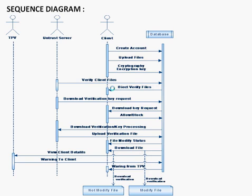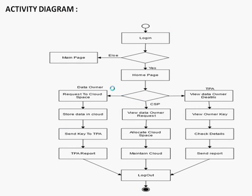There are three users: DPV, untested server, and client. And there is one database. This is the activity diagram of the project. First, login and main page will arrive, then home page, then request to the space, view data on a DDX, and then store data in cloud, view data on a request, allocate cloud space and then maintain cloud, then finally download.